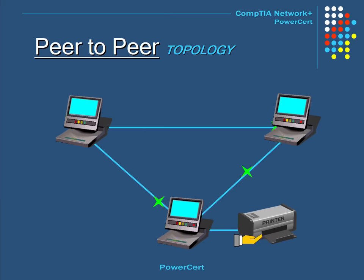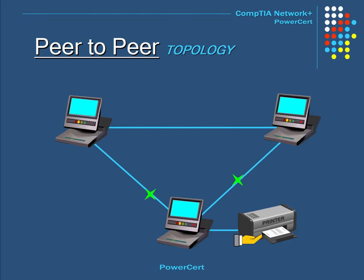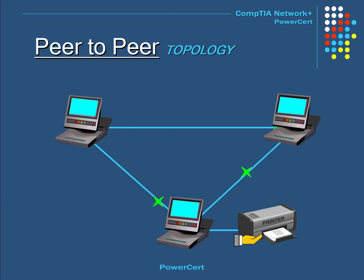A peer-to-peer topology is where all the clients on the network talk to every other client to share their resources with each other. For example, one computer can share their printer, another can share files on their hard drive, and so on. There is no centralized server that clients connect to — they all just connect to each other. Peer-to-peer topologies are simple to set up and are typically found in homes and small businesses.